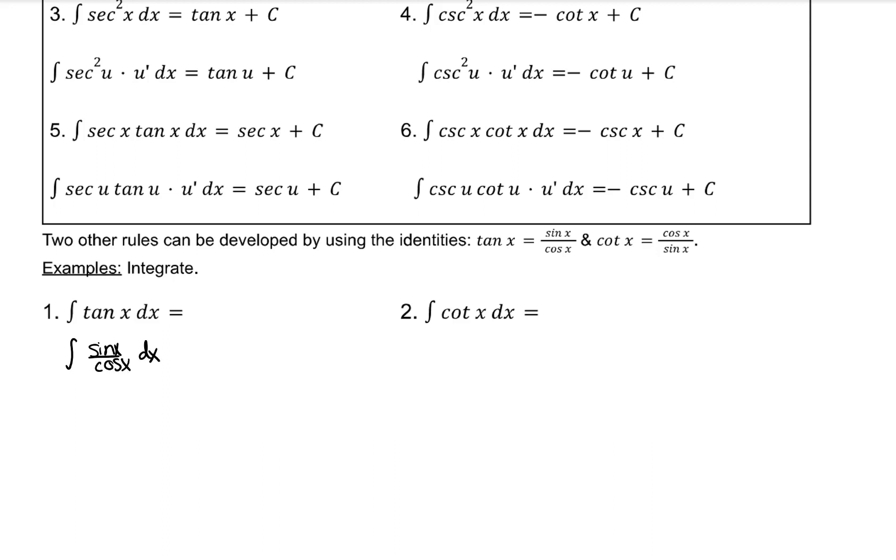How would I integrate sine x over cosine x? Well, if my denominator is u, then my numerator is almost u prime. I just need to multiply by negative inside and out my integrand. Now you have u prime over u, so the integral is ln absolute value u.